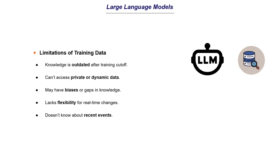Because of the training cutoff, when a user asks about something that happened recently, the model only uses the previous information it had. Another limitation is it cannot access private or dynamic data. For example, in a RAG application, we want the LLM to answer questions based on a specific private document. The LLM was not trained on this data — like a company's internal policy documents that are not publicly available — so it doesn't have access to this information.